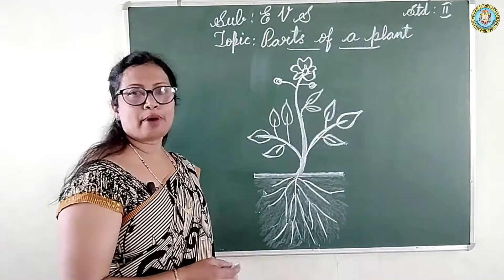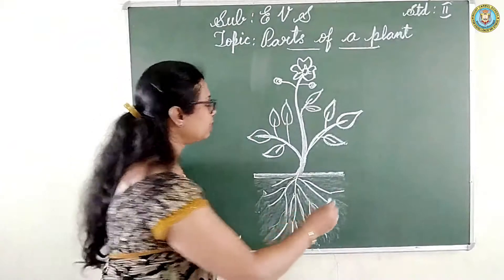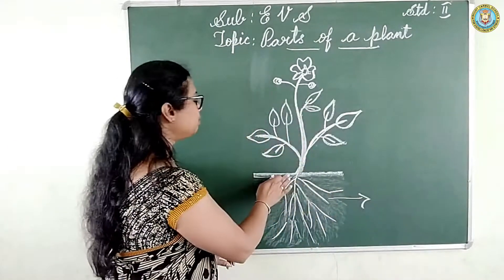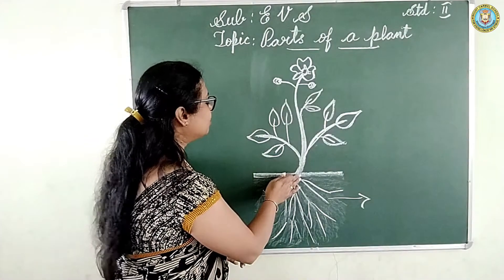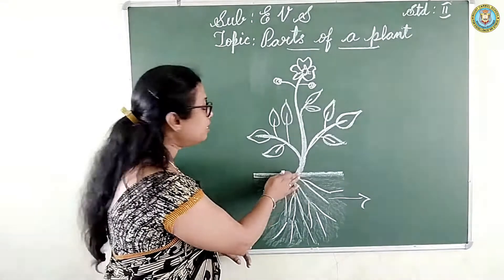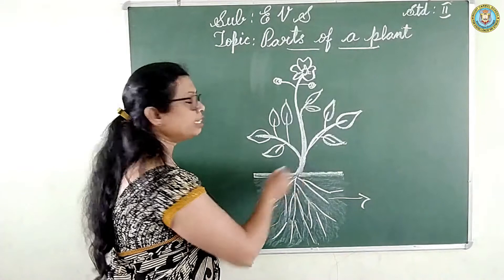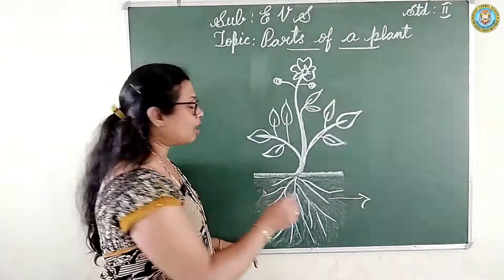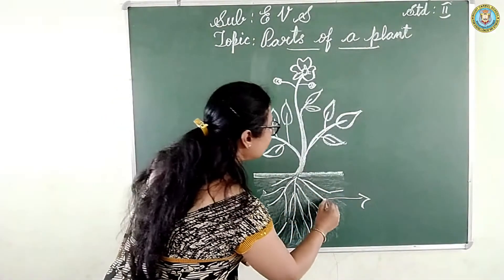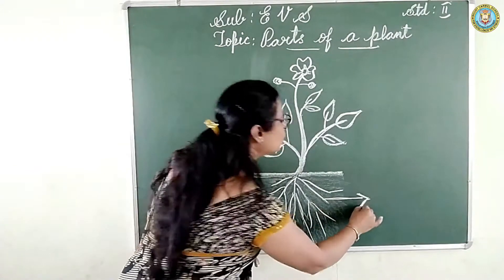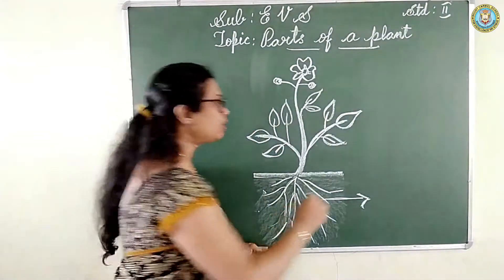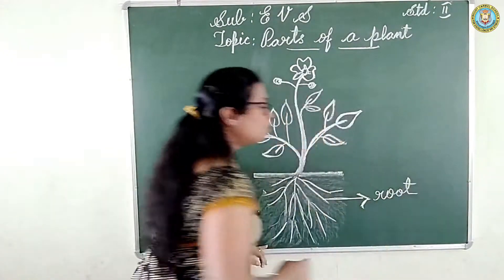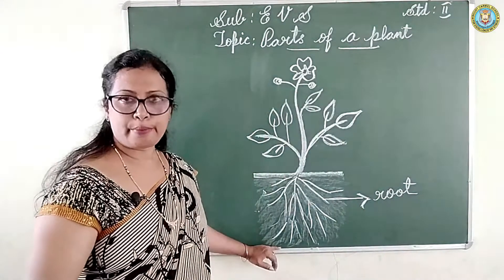Come, let's see the parts of a plant. See here — below the soil, under the ground, there is a part of the plant. That is called root. R-O-O-T, root. Root means beru.